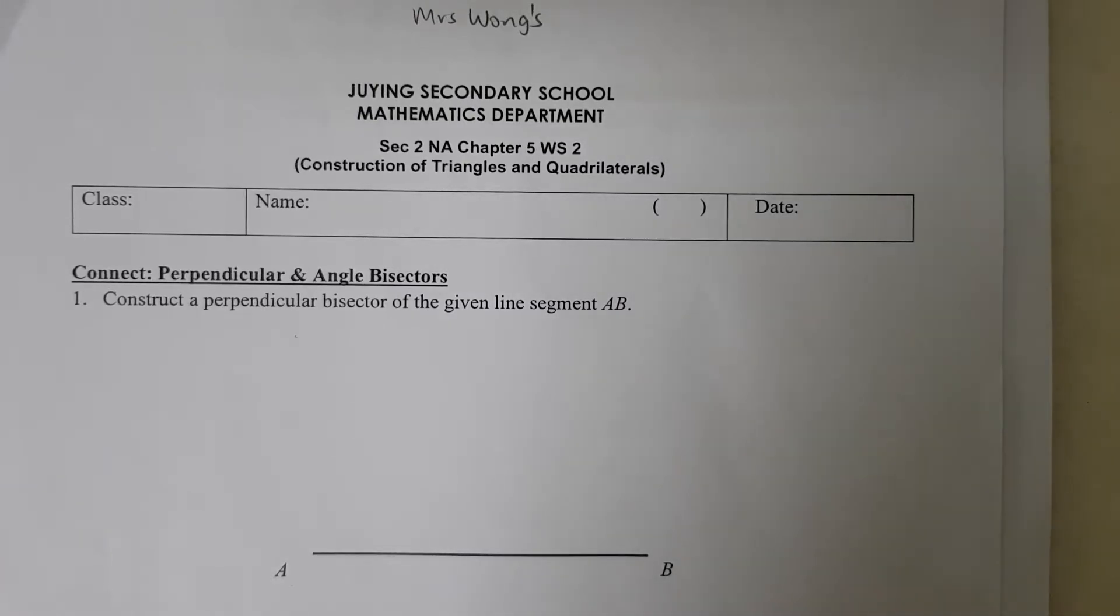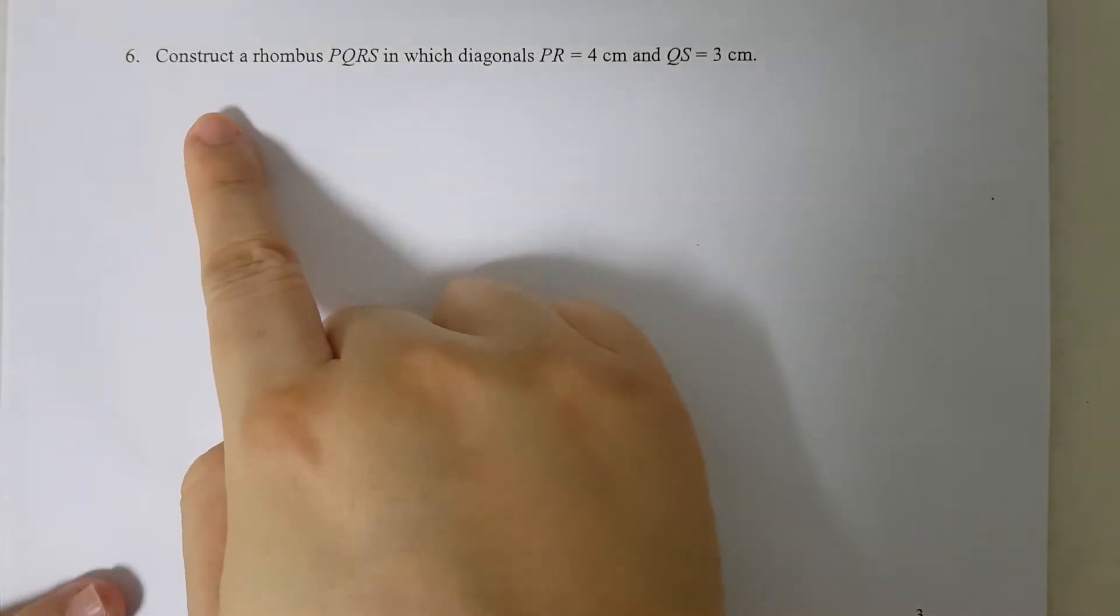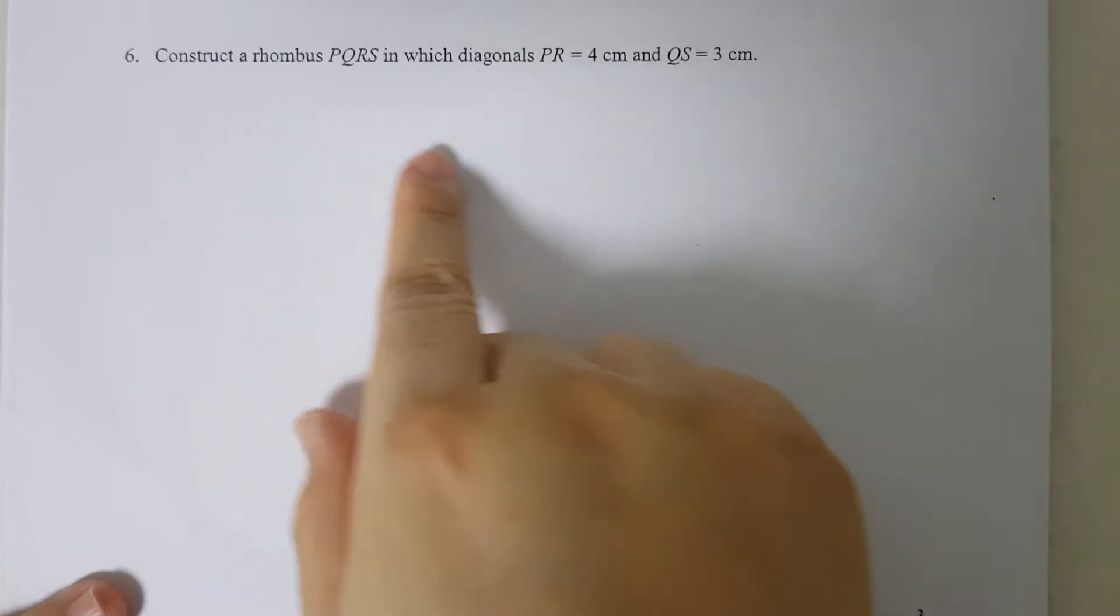Hello, today we are going through question 6 of your chapter 5 worksheet 2. We have gone through most of the questions in class, so we'll look at question 6 which wants us to construct a rhombus PQRS in which the diagonal PR is 4 cm and QS is 3 cm.